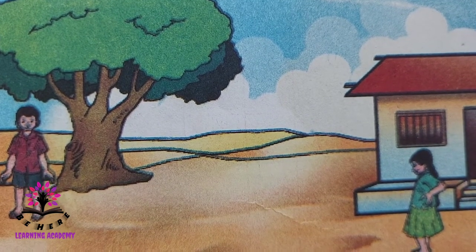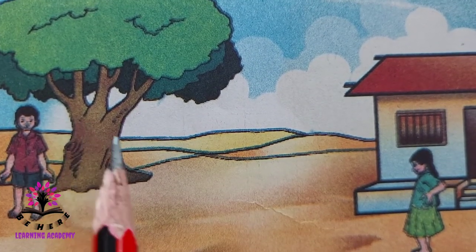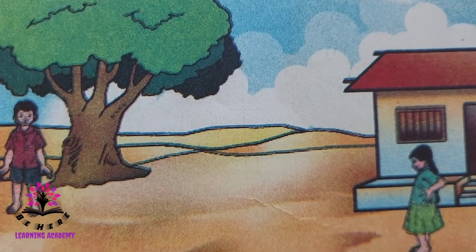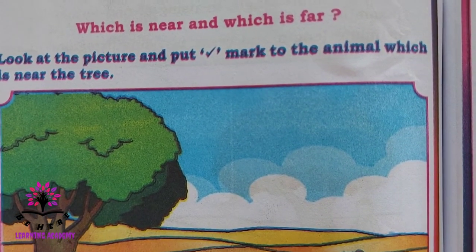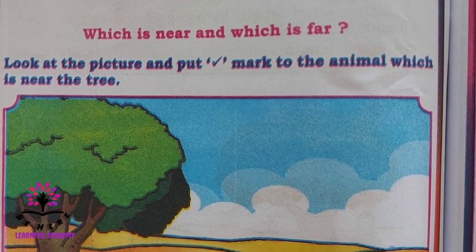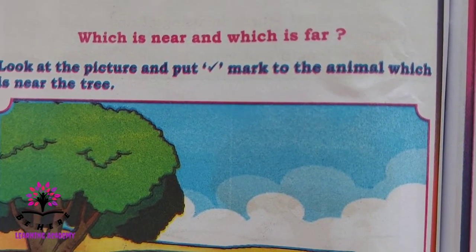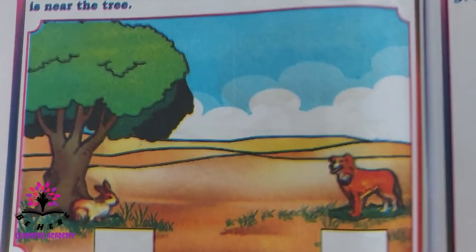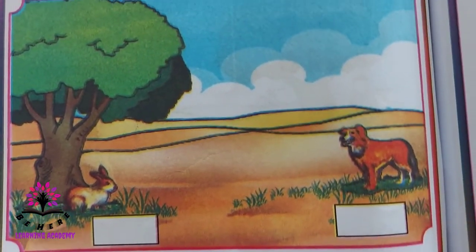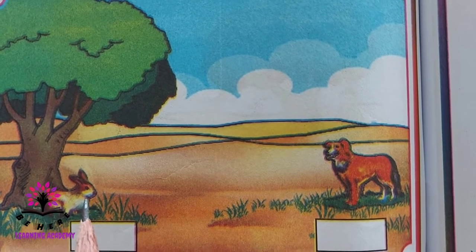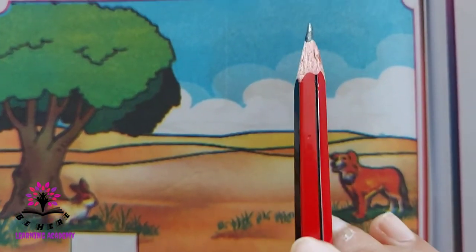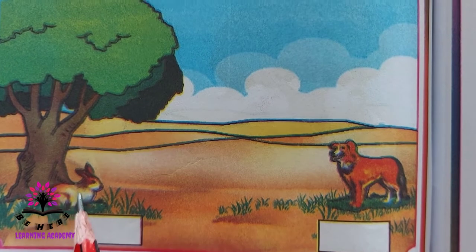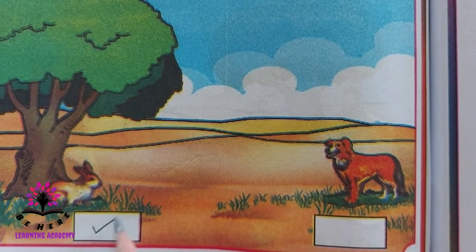Who is far from the tree? The girl is far from the tree. Now, which is near and which is far? Look at the picture and put a tick mark on the animal which is near the tree. There is a tree and a rabbit — tick the animal near the tree. The rabbit is near the tree, so put a tick mark there.